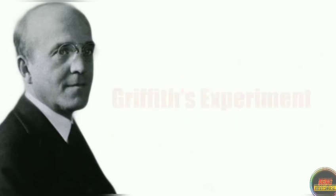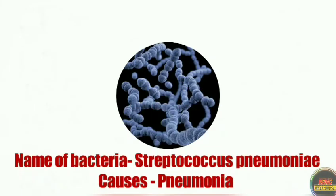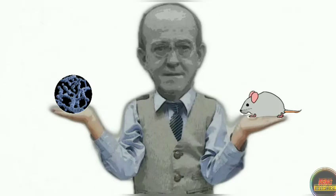Now let's see what experiment Griffith made to prove that DNA is the genetic material. He made use of a bacteria named Streptococcus pneumoniae, which is a gram positive bacteria that causes pneumonia. And in order to carry out his experiment, he needed a host body, and for this he took mice. So he took two things for his experiment: the bacteria Streptococcus pneumoniae, and mice as the host.